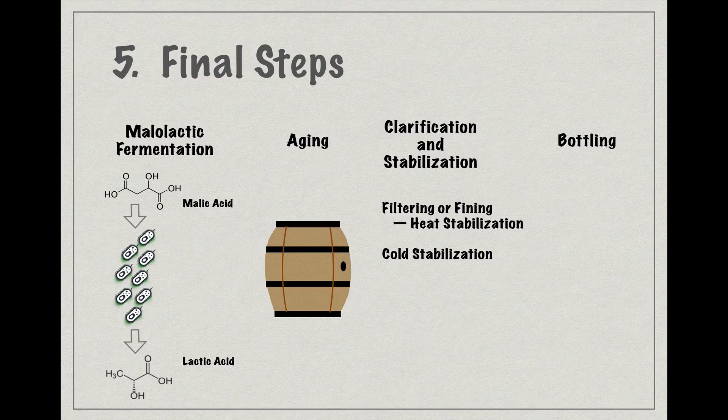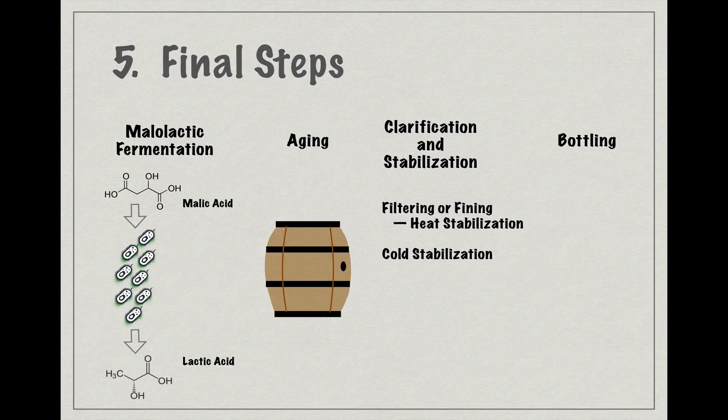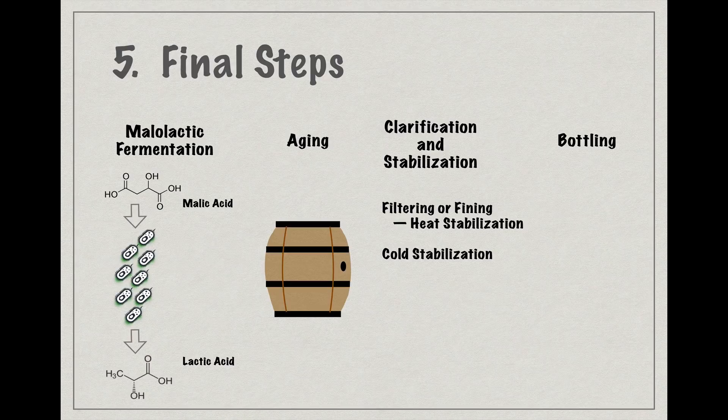But if the winemaker wants a wine free of any particles, then it can be run through a filter, or it can be fined by adding one of a number of substances to the wine, like egg whites or bentonite clay, for example, that will form ionic bonds with the particles in suspension and pull them out of solution, leaving a particle-free wine.